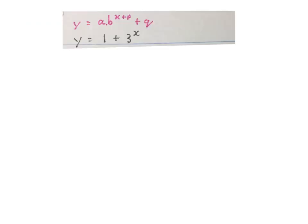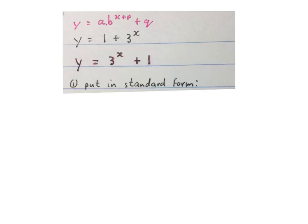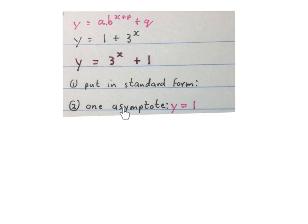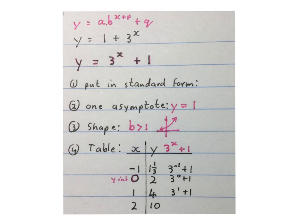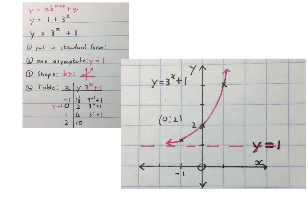This next equation is different — you have to put it in standard form by rearranging: bring one term to the front and one to the back. Now it's in standard form. There is one asymptote: y = 1. The shape is determined by the base b being bigger than 1, so the graph will be going up from left to right. Use your calculator to draw a table, or do it manually, then plot the asymptote and points on the Cartesian plane. Stop the video and check your domain and range and whether the graph is ascending or descending.